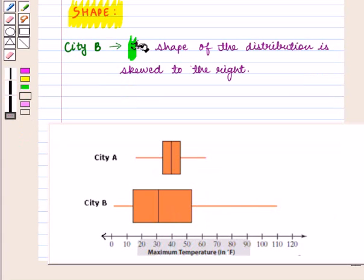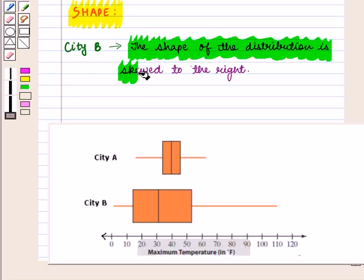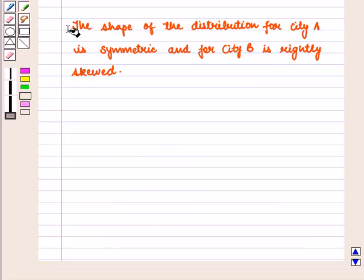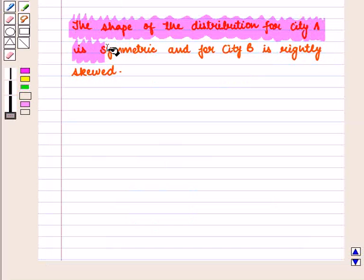So we can say that the shape of the distribution is skewed to the right. Thus we say that the shape of the distribution for city A is symmetric and for city B is rightly skewed.